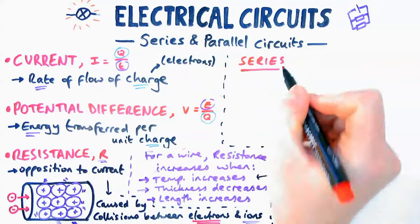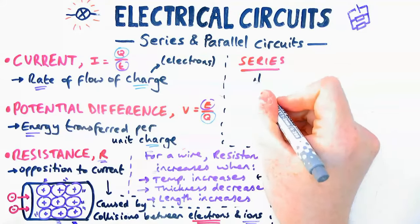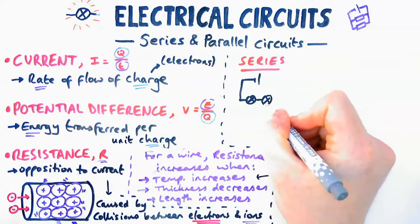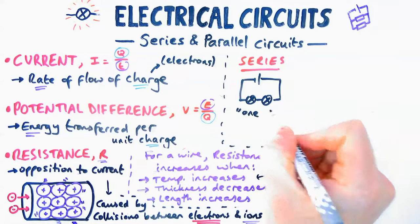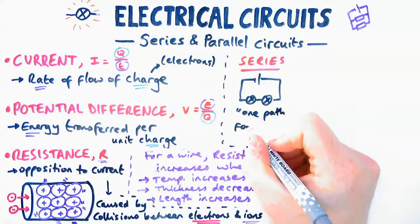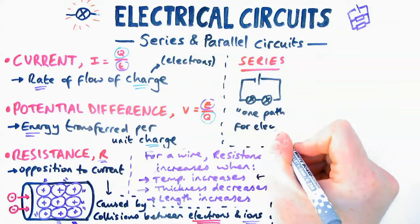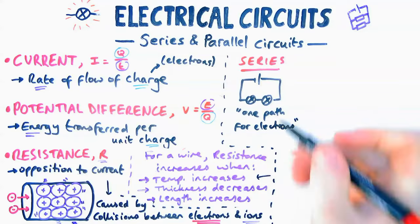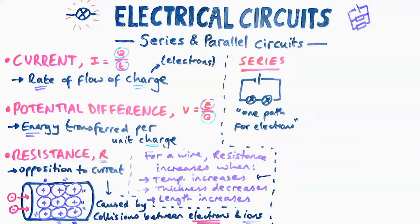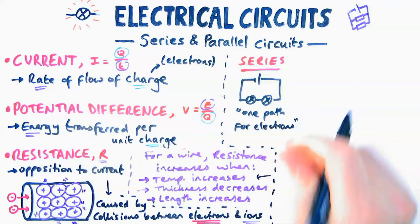Now let's talk about these series and parallel circuits. So you need to be able to identify them. A series circuit looks something like this. It can have any number of components in it. I've got two bulbs here. And what defines it is that the electrons can only take one path. There's one path for the electrons or the current to take, it's just in one loop.